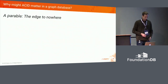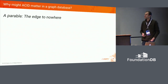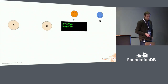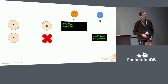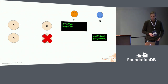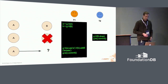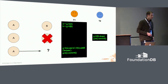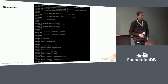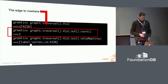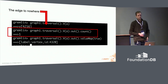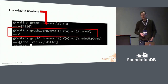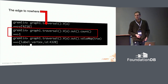So why might ACID matter in a graph database? I'm going to tell a little story — the parable of the edge to nowhere. We start with two vertices, A and B. User one looks up vertex A and vertex B. Then another user comes in — while this first transaction is still open — and drops one of those vertices. Then I go in and add an edge between the two: say, 'Ted knows Tom,' and commit. Well, if you're running on Cassandra, you're going to get what we call a phantom edge — this edge to nowhere. You run a query on your graph and it says vertex A knows one person, but he doesn't really. This is equivalent to not being able to trust a foreign key constraint in a relational database.